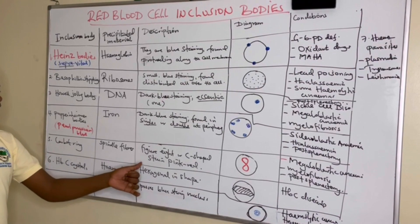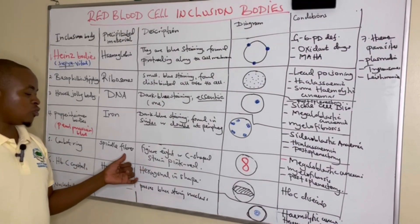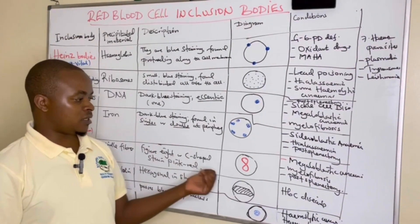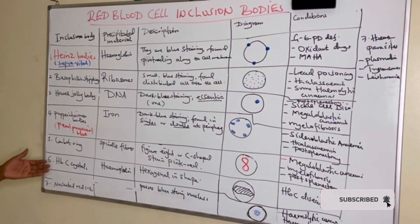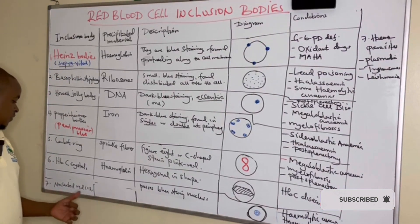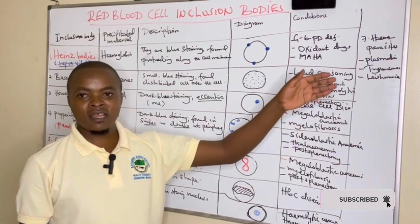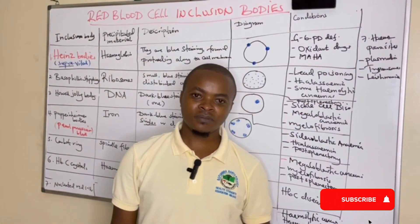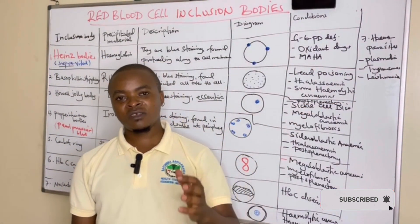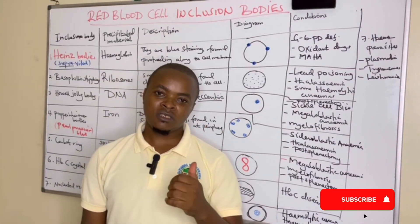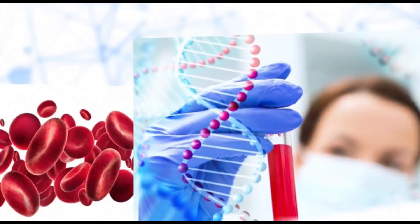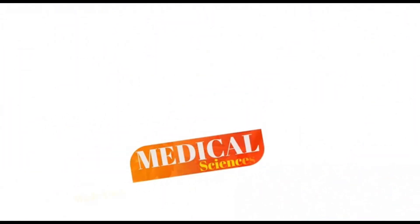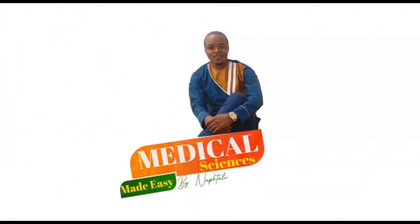Cabot rings are figure-eight shaped, due to remnants of spindle fibers, seen in megaloblastic anemia and post-splenectomy. We also covered hemoglobin C crystals and nucleated red cells plus hemoparasites. Thank you so much for listening — remember to subscribe and like the video.